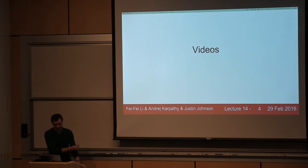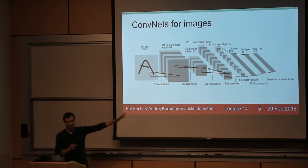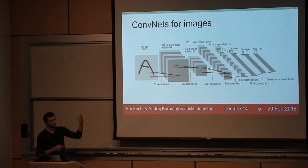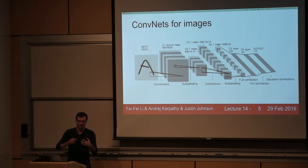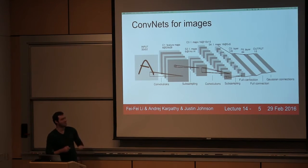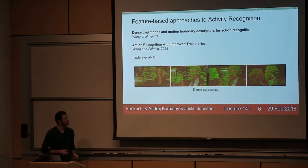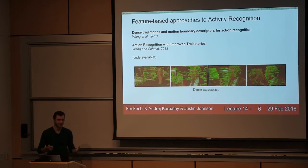Today we'll talk about videos specifically. In image classification, you have an image coming in that you process to classify. In the case of videos, we have multiple frames — so instead of 32 by 32, we have 32 by 32 by T, where T is some time extent. Before diving into how we approach these problems with convolutional neural networks, I'd like to briefly discuss feature-based methods. The most popular features right before convolutional networks became popular were dense trajectory features developed by Heng Wang et al., which inspire some later developments in how convolutional networks operate over videos.